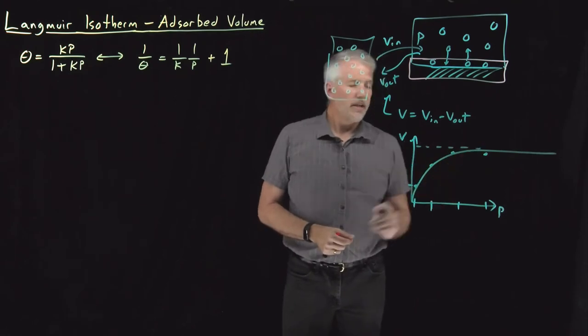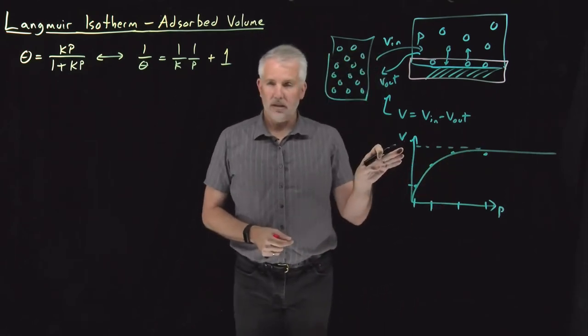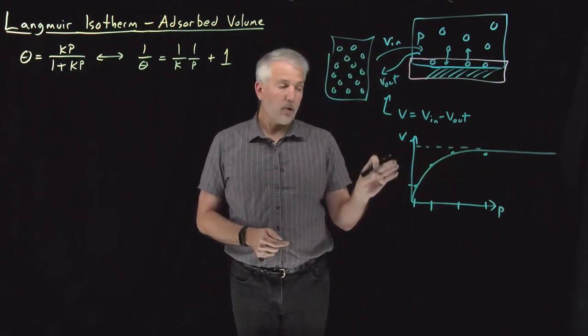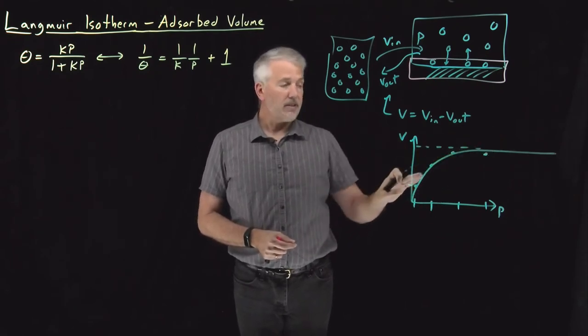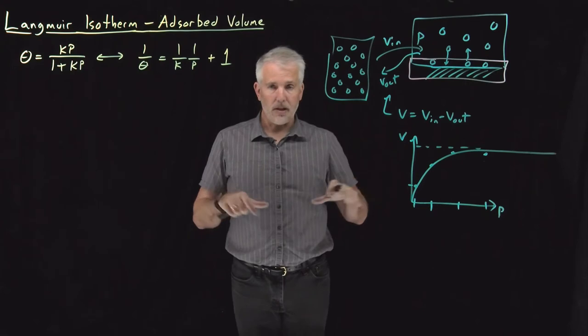So asymptotically, it no longer approaches one as the surface coverage does. If I were plotting surface coverage versus pressure, it absolutely would approach one as I get a full monolayer coverage on the surface.